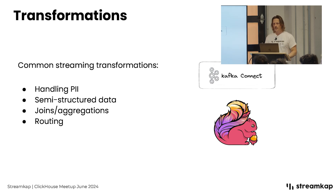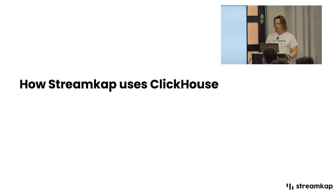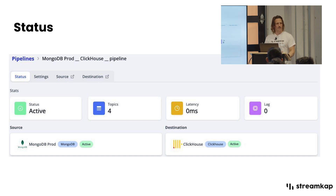It's also interesting to hear how we actually use ClickHouse as part of our own application. We're built on Kafka, Flink, and Debezium, and we have a ton of real-time data being produced by our application, which is really useful operationally and for our customers. Specifically, in StreamCap's pipeline status view, you want to see latency in real-time — it's super important for us operationally.